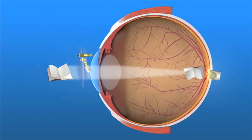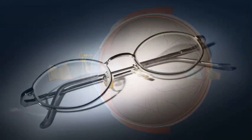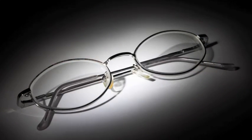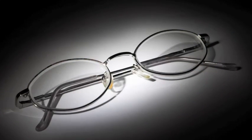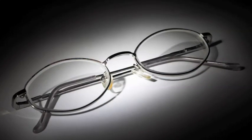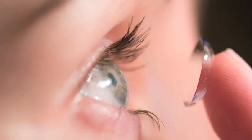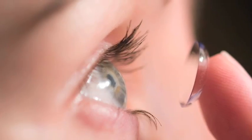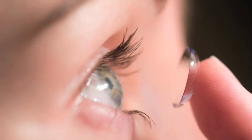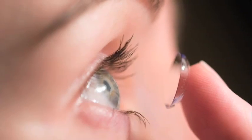The most common method for correcting refractive errors is the use of eyeglasses. The prescribed lenses in the glasses refocus light rays onto the retina. Contact lenses float on the tear film that coats the cornea, and they also refocus light rays onto the retina.